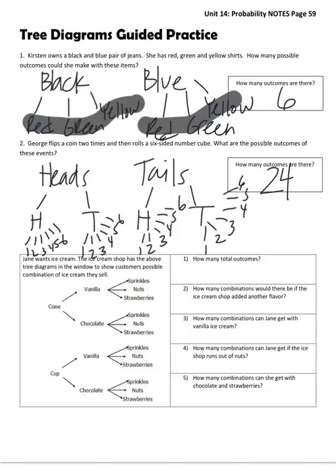The last problem we'll do together on tree diagrams. Jane wants ice cream. I'm going to tell you, you may want to star this problem because you might see something like this on your test. All right, so anyway, the ice cream shop has the above tree diagrams in the window to show customers possible combinations of ice cream that they sell. So, question 1, how many total outcomes? 3, 6, 9, 12. So I made my tree diagrams up here going vertically, but they can also go horizontally. So here's 12 different outcomes.